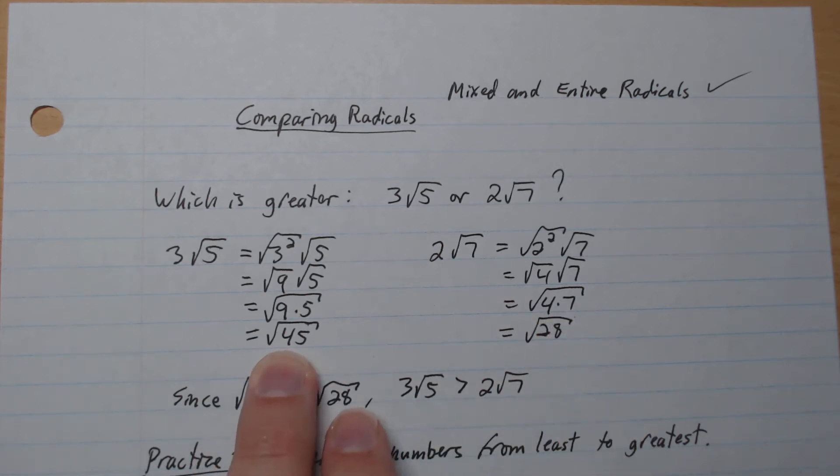And now since root 45 is bigger than root 28, then 3 root 5 is greater than 2 root 7.